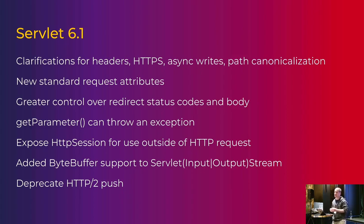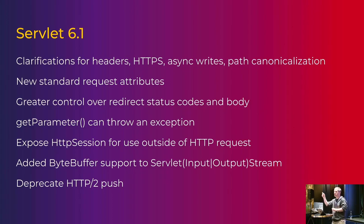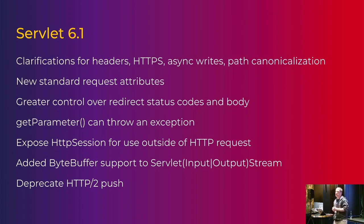What's replaced it is 103 Early Hints. You send a request for resource A, the server sends back a 103 informational response — not the final answer — with a set of headers saying these are the resources this resource is probably going to request. The client can look at those headers and say: got it, got it, need it — go and request it. The client is now in control and can request exactly what it needs. There is no API for early hints in the servlet spec yet, but Jetty has an implementation we're probably going to take and put into the spec and into Tomcat.